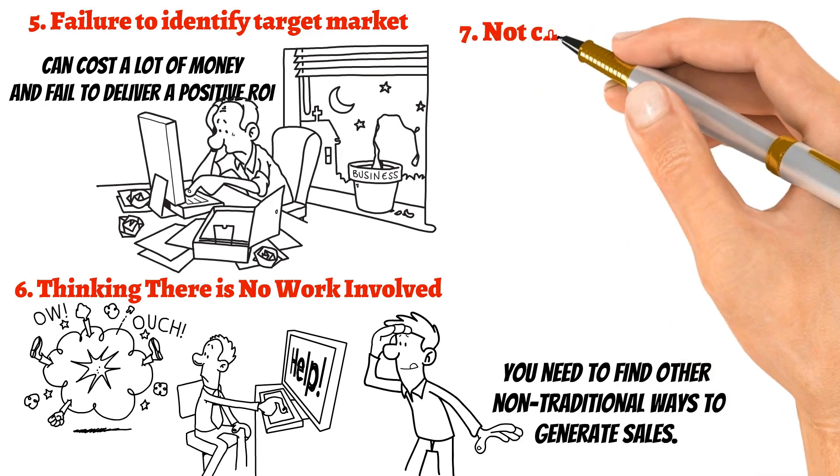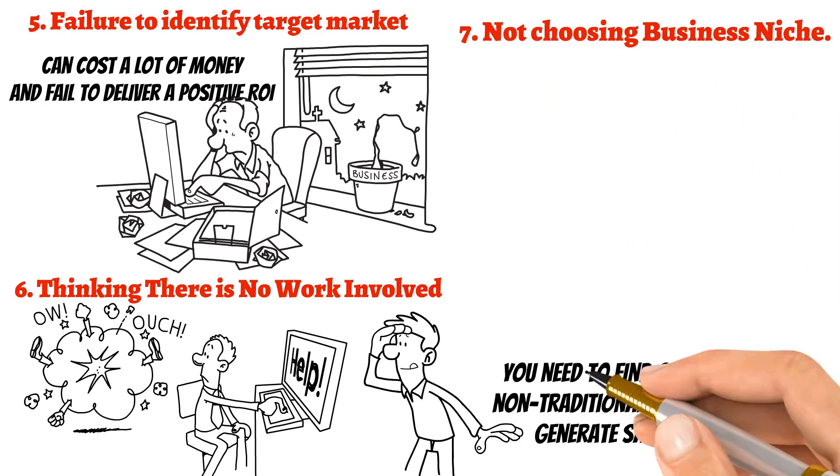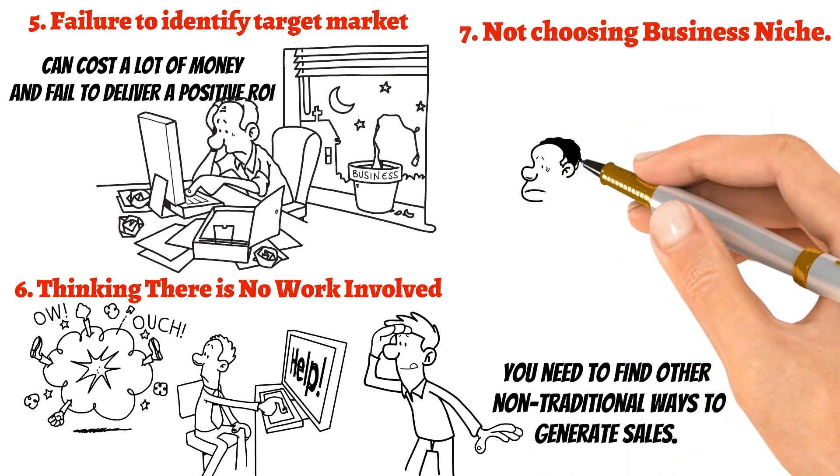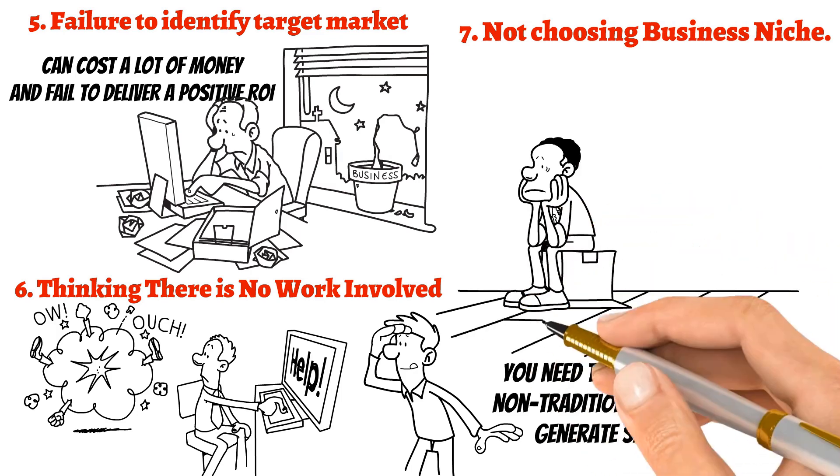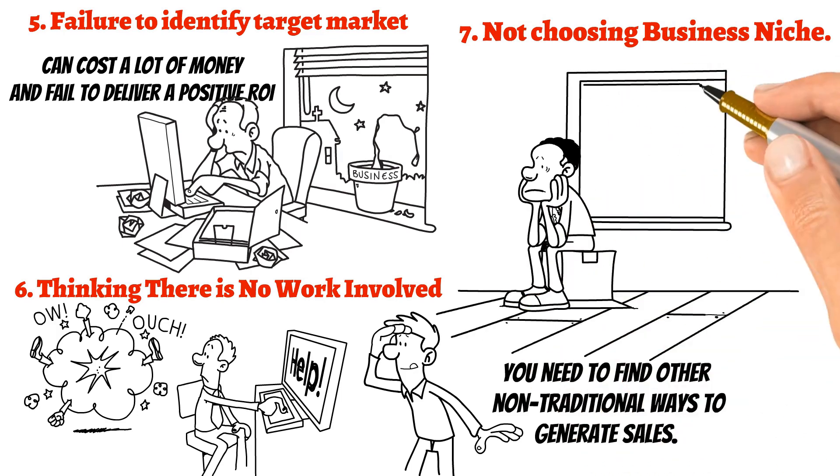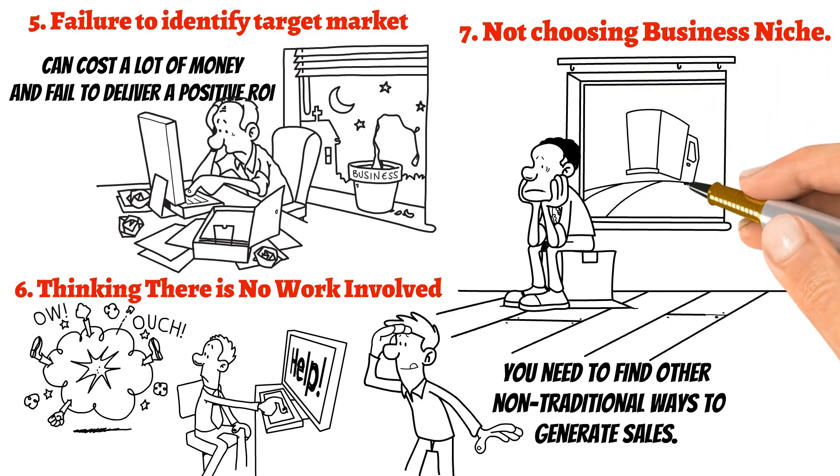And number seven: not choosing the right business niche. When that happens, it's easy to fall into the trap of complacency. The result is a once strong business niche that turns into a weak niche when faced with stronger competition, changing marketing conditions, or changing customer needs.